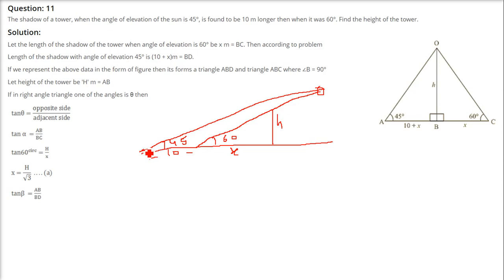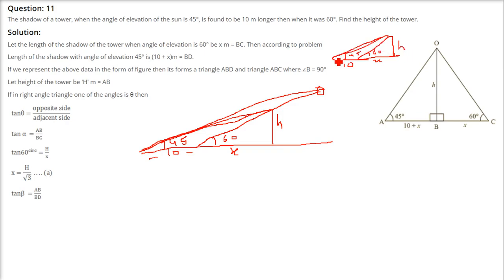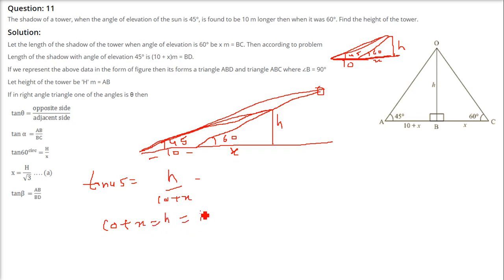We have a triangle where one angle is 45 degrees, another is 60 degrees, this side is 10, this is X, and this is H. Taking the bigger triangle first — because tan 45 is 1 — tan 45 equals H divided by (10 plus X). Since tan 45 is 1, we get 10 plus X equals H. This is our first equation.